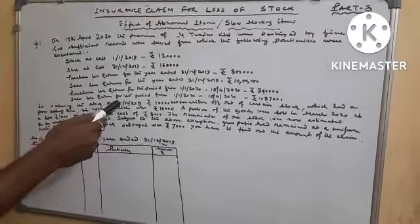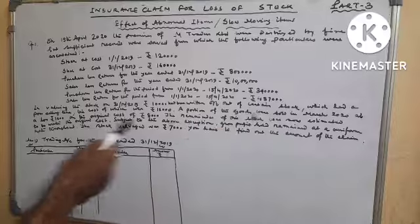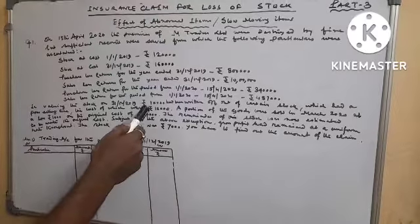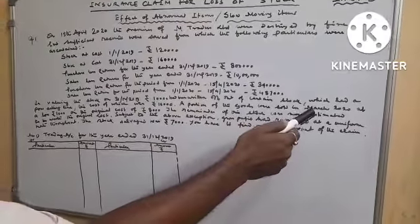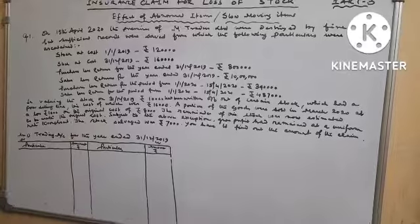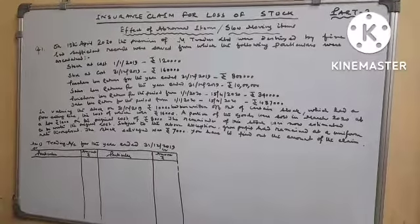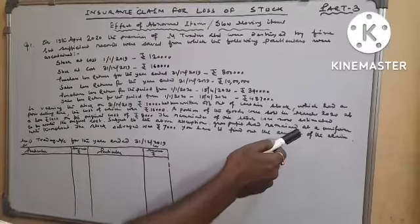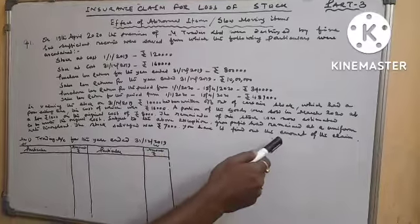In valuing the stock on 31-12-2019, Rs. 10,000 has been written off out of certain stock which had a poor selling line, the cost of which was Rs. 16,000. A portion of the goods were sold in March 2020 at a loss of Rs. 1,000 on the original cost of Rs. 8,000. The remainder of this stock was now estimated to be worth the original cost. Subject to the above exception, gross profit has remained at a uniform rate throughout. The stock salvage was Rs. 7,000. You have to find out the amount of claim.